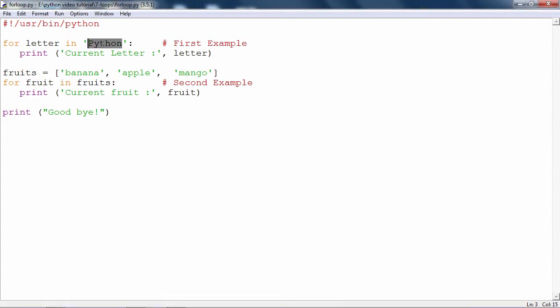So, in the first example, the string Python is traversed letter by letter or character by character. Each character from the sequence is respectively stored in the variable called letter and it is printed.